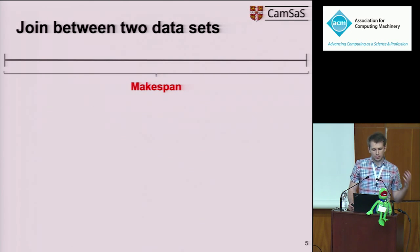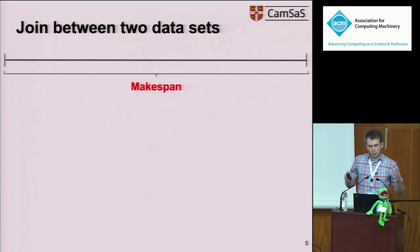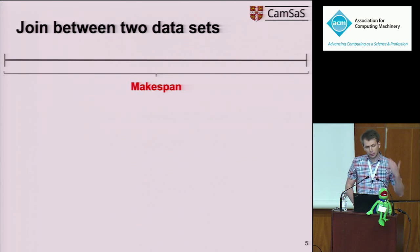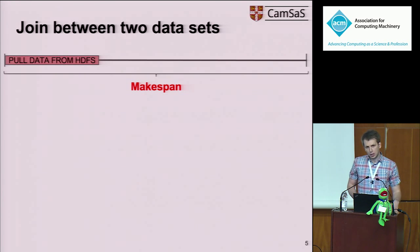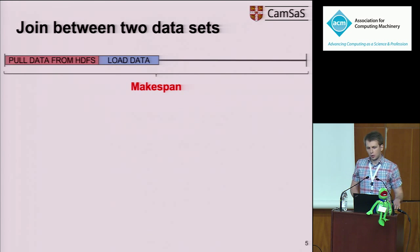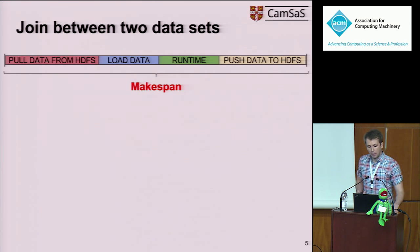Before I tell you about the experiments Kermit runs, let me first introduce you to makespan, which is a metric I will use throughout the entire presentation. Makespan is the entire time it takes from when Kermit submits a job until he gets the output. It includes pulling data from HDFS, loading the data into the data processing system, the runtime of the job, and pushing the data back.